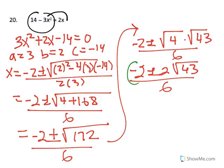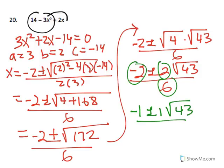And now we can reduce by the common factor of 2. So negative 1 plus or minus square root of 43 all over 3.